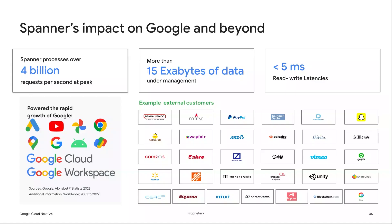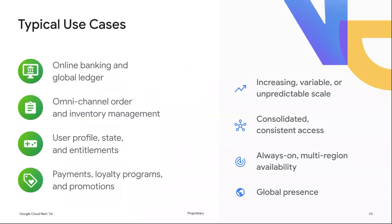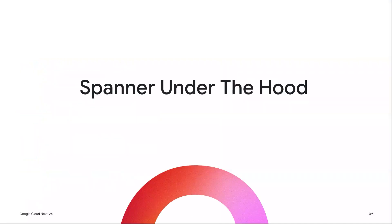These volumes support some of Google's biggest billion-plus user services including Ads, YouTube, Gmail, and Photos, in addition to some of the largest companies worldwide. Typical Spanner use cases include financial services for a consistent global view of operations, retail for consistent inventory management, healthcare for always-available secure user information, and gaming for low-latency scalable in-game interactions including user profiles, entitlements, and shared game state.